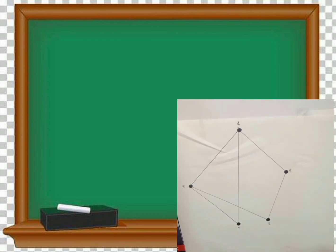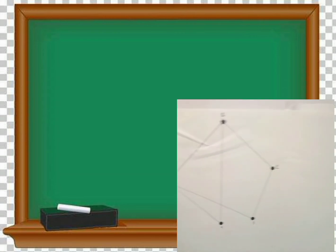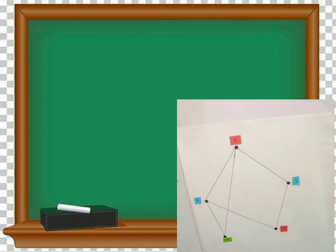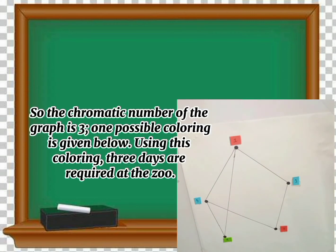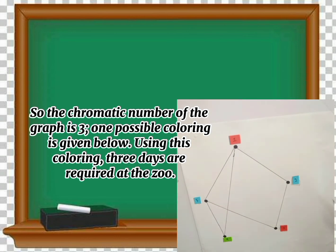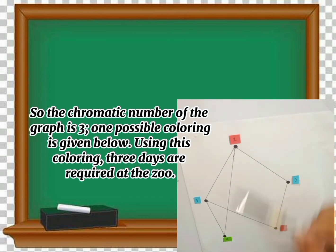Here I'm going to show you the color graph. This is now the graph coloring. As you can see, I use red, blue, and green as the three colors. According to this, the chromatic number of the graph is three — that is vertices one, four, and five. This is the chromatic number.